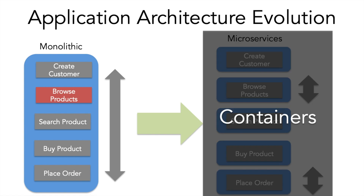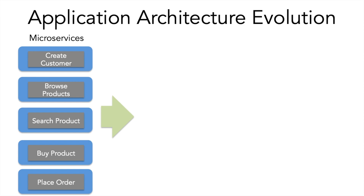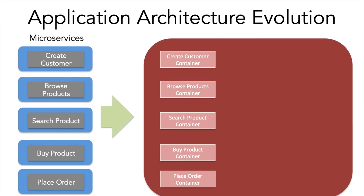This is where containers excel and where they are essentially meant to be used. Microservices is the best use case for container realization — containers make a lot of sense when your applications use microservices architecture. That doesn't mean there are no other use cases, but one of the biggest use cases is to realize and implement microservices architecture. Taking the same example, we can place all five functionalities in containers. This outside box is a single host with five different containers, one for each functionality.